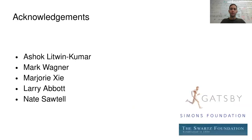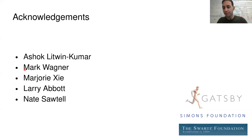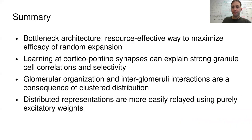To summarize: this bottleneck architecture is a resource-effective way to maximize the efficacy of random expansion. Learning at corticopontine synapses via Hebbian plasticity can explain the strong granule cell correlations and selectivity. The glomerular organization in the insect olfactory system and the interglomerular interactions are a consequence of clustered input statistics. Distributed representations like those in motor cortex are more easily compressed using purely excitatory weights compared to clustered ones. Thank you for your attention.